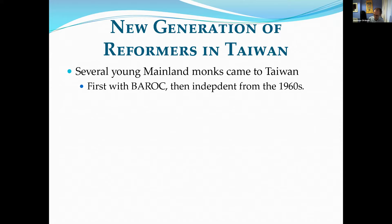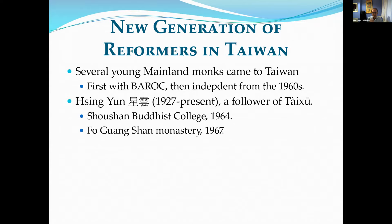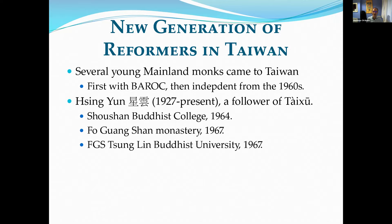One figure was Xingyun, heavily inspired by Tai Xu's writings and modernist spirit. In the 1960s, still in his 30s, he set up a Buddhist college in Shoushan in central Taiwan, then in the late 1960s established Foguang Shan Monastery in southern Taiwan. One of the very first buildings within Foguang Shan was the Donglin Buddhist University in 1967 — its English name is 'Buddhist University,' but in this talk I'm referring to it as a college.